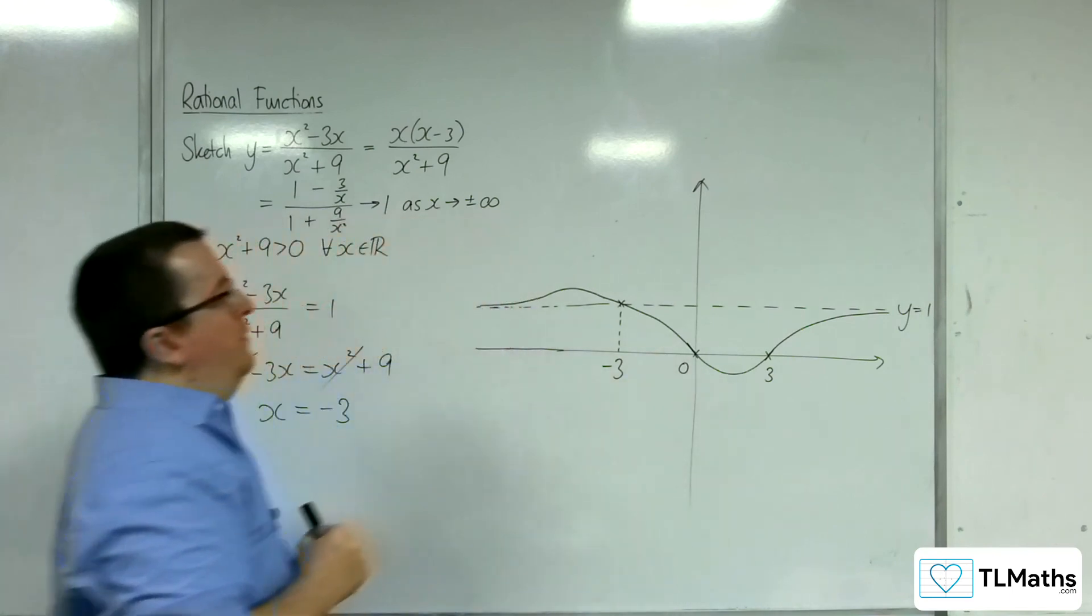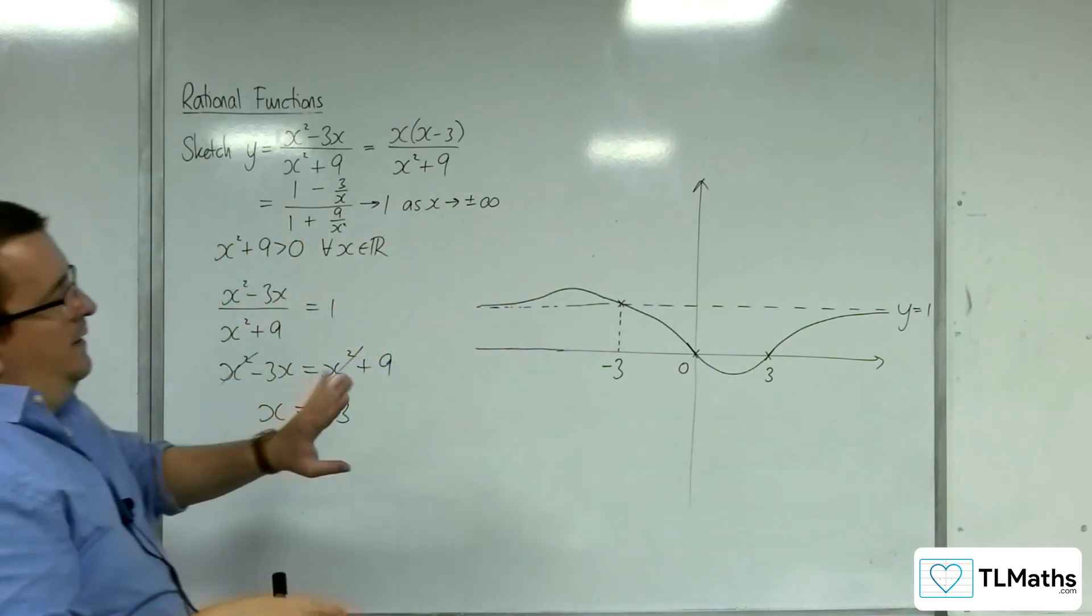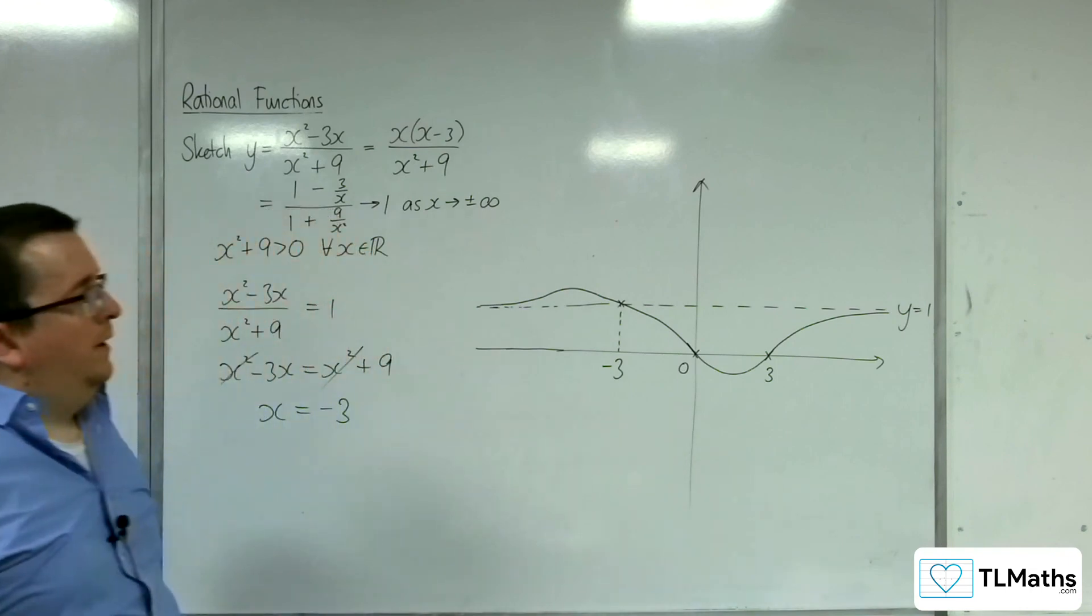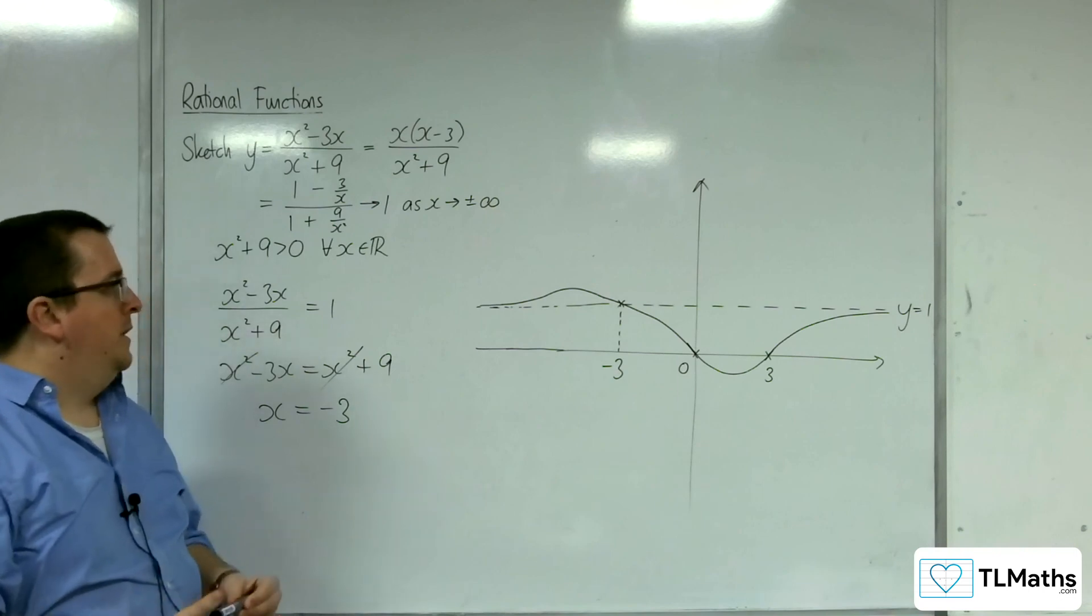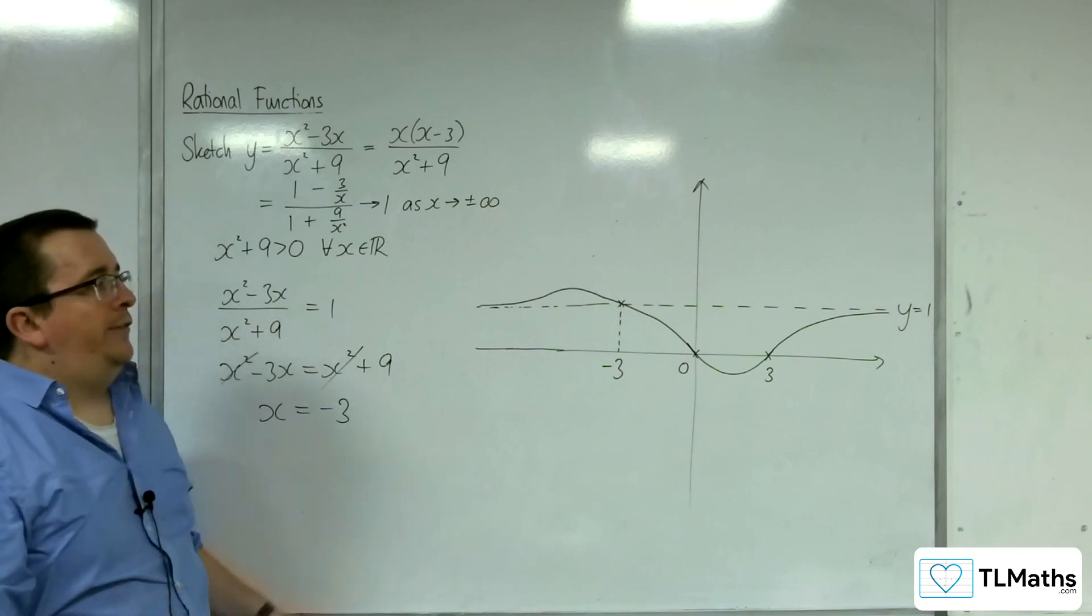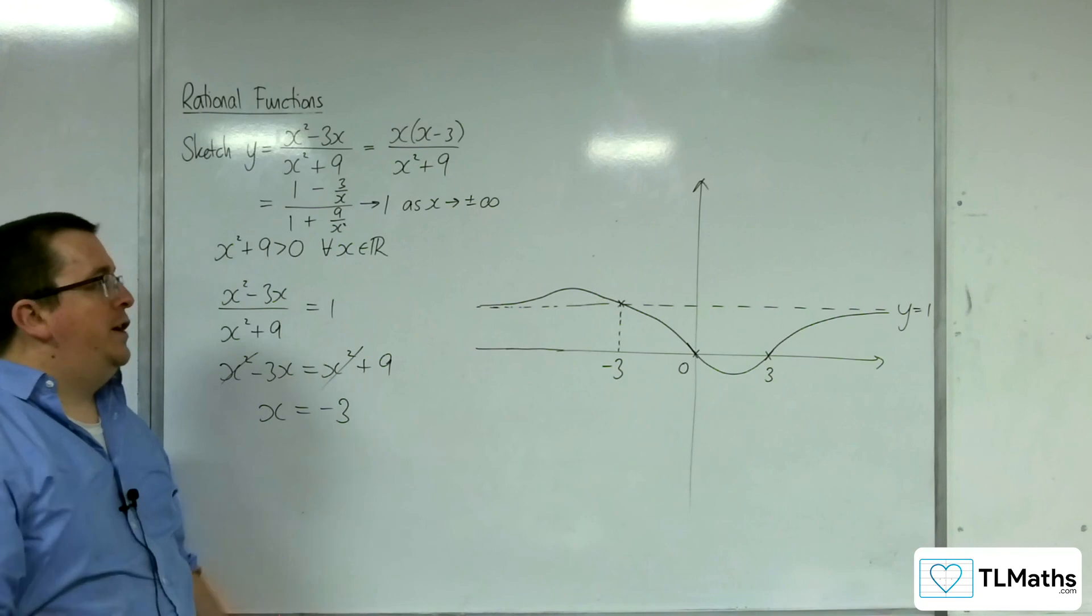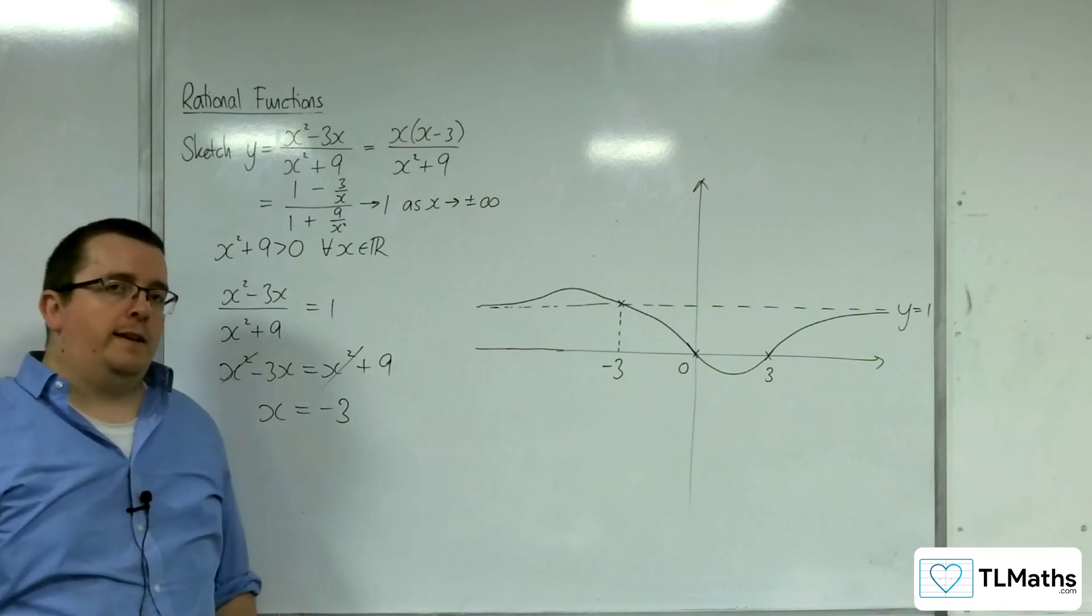Okay. And so the curve must look something like this. So it's definitely unusual based on the curves that we've sketched so far. But that's what we have to deal with when there are no vertical asymptotes.